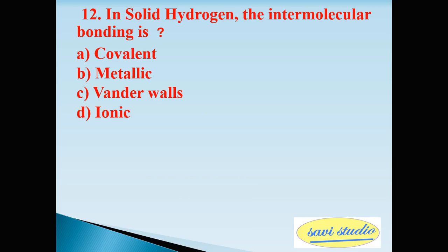12th question: in solid hydrogen, the intermolecular bonding is Option A: covalent, Option B: metallic, Option C: Van der Waals, Option D: ionic. The right answer is C: Van der Waals.